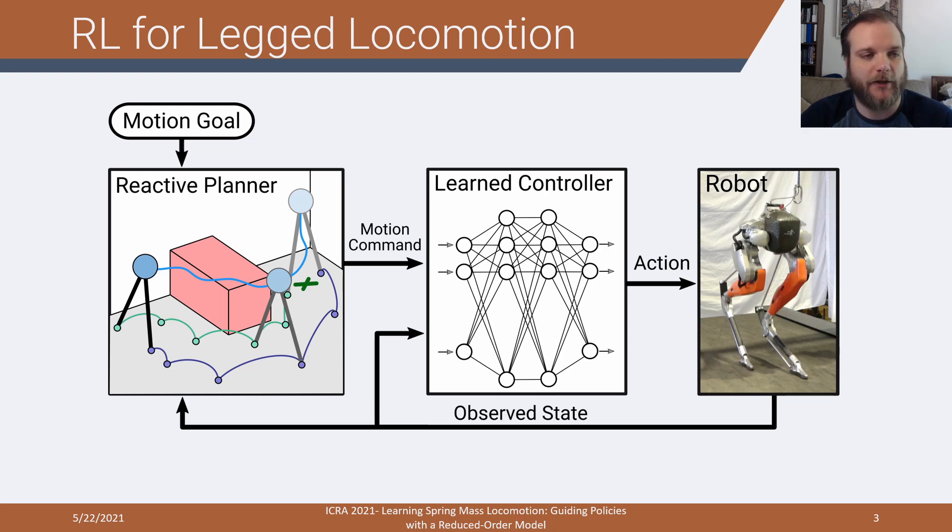If we look closer at those, we can create a structure like this, where we have some motion goal that's fed into a reactive planner, which uses a simplified model. We're dealing with bipeds here, so we're going to be using inverted pendulum models. That's going to optimize a motion and apply a motion command that's then sent to a learned controller, which at a higher rate is going to attempt to stabilize around that motion command and send actions through PD targets to a full-order robot. We're then going to observe the state of the robot using a state observer and feed that back so the learned controller can stabilize and the reactive planner can at a slower rate re-plan the motion with an updated robot position.